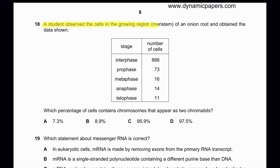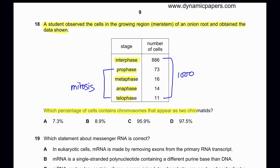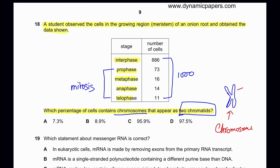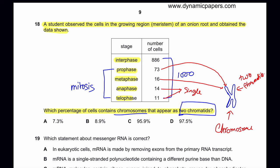Question 18: A student observed cells in the meristems of onion root and obtained data showing number of cells in interphase, prophase, metaphase, anaphase, and telophase, totaling 1000 cells. The question asks which percentage of cells contain chromosomes that appear as two chromatids. Chromosomes appear as two chromatids joined together only in prophase and metaphase. In anaphase they appear as single chromatids, and in other stages they are not visible as distinct chromatids. So only the cells in prophase and metaphase are counted.